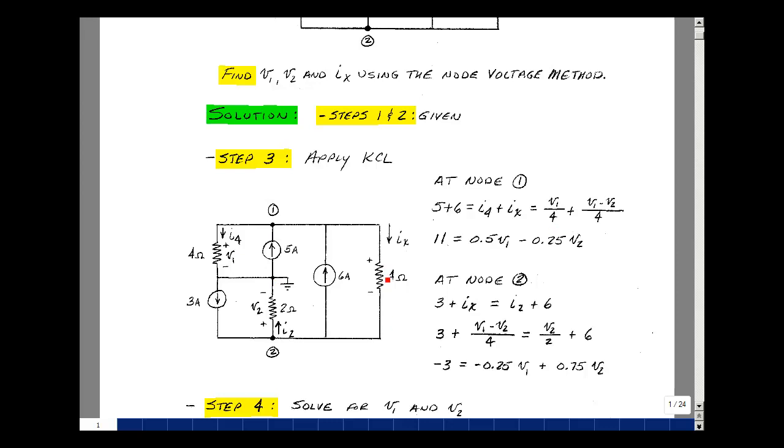The current in this 4 ohm resistor, called it I sub x, is going to be this node voltage, which is V1, minus this node voltage, V2, divided by 4. That's this term right here. I have 11 is equal to V1 over 4 plus V1 over 4, that's a half of V1, and then I've got V2 over 4 with a minus sign, and that's minus a quarter V2.